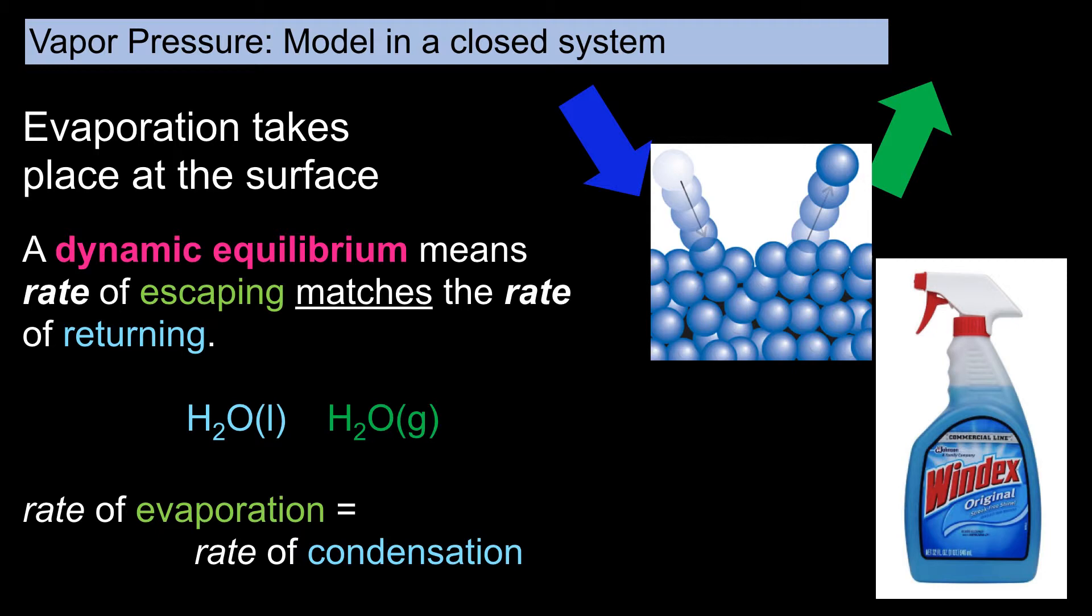Equilibrium does not mean the amounts of gaseous Windex and liquid Windex are equal. Instead, it means that the rates of evaporation and condensation are equal. In other words, for every molecule of Windex that evaporates, another molecule condenses back into the liquid state.